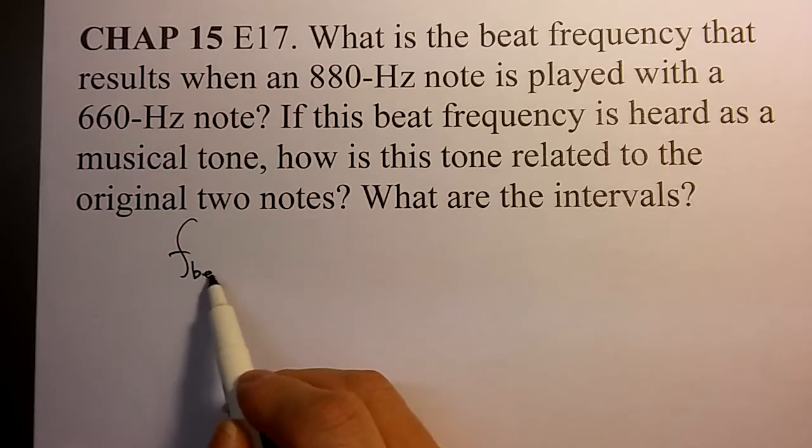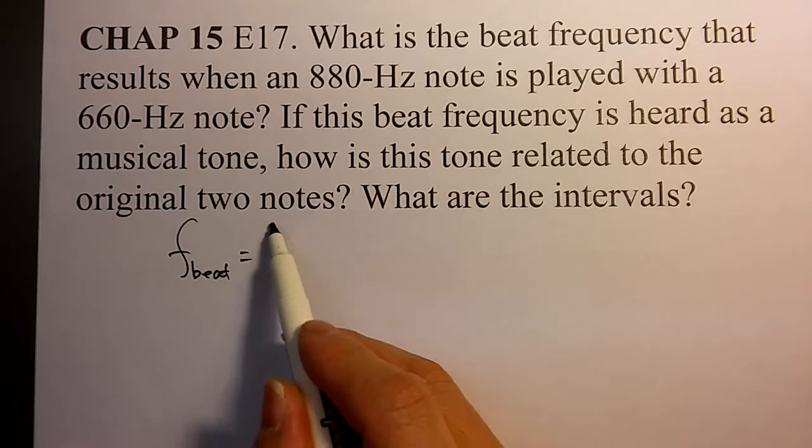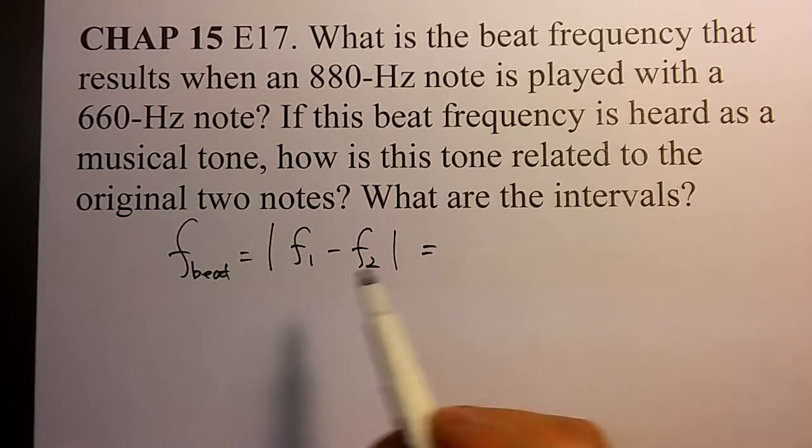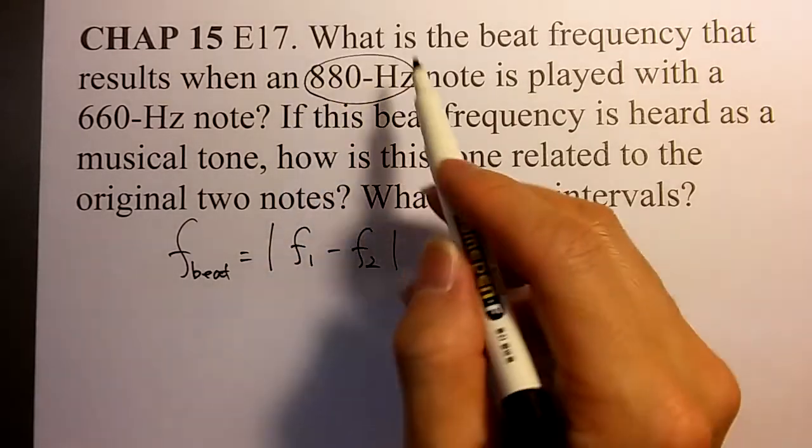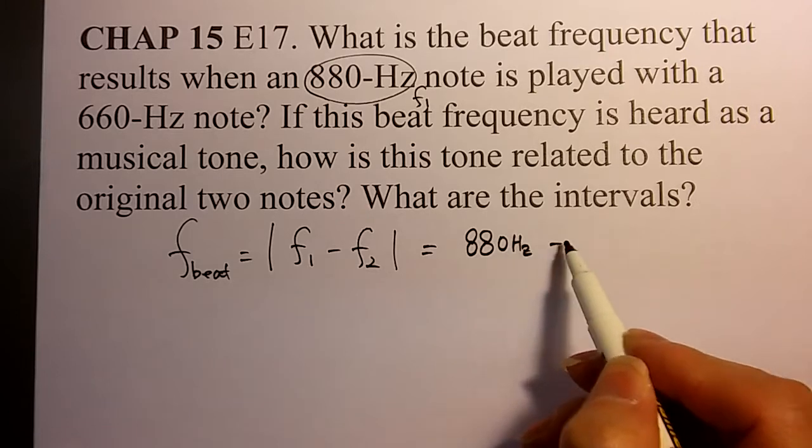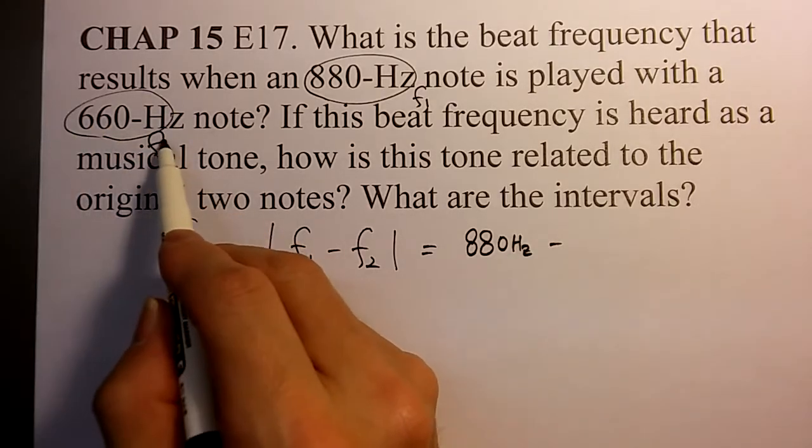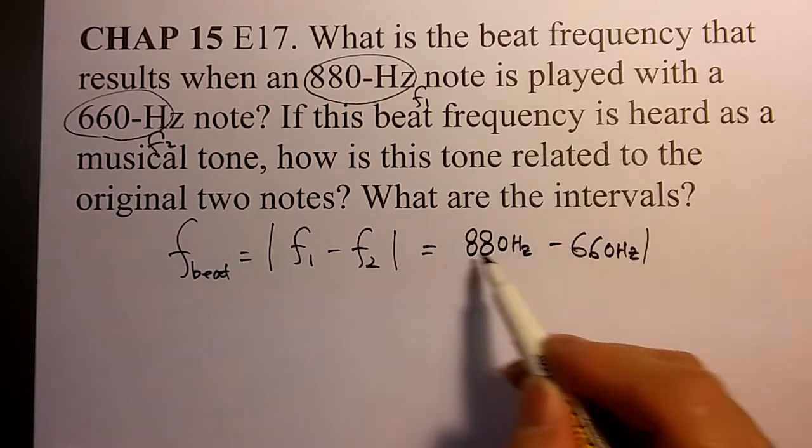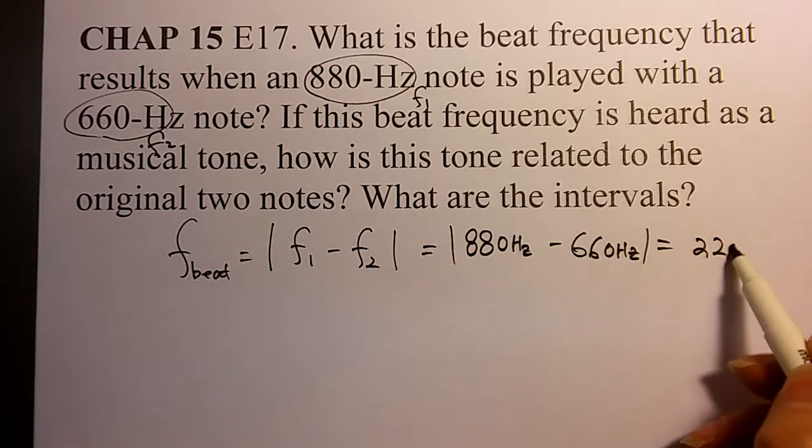F beat, you can calculate as an absolute value as F1 minus F2. F1 is 880Hz, minus F2 as 660Hz. Then once subtracted, 220Hz.